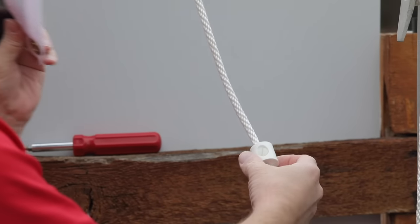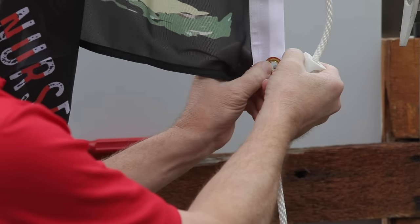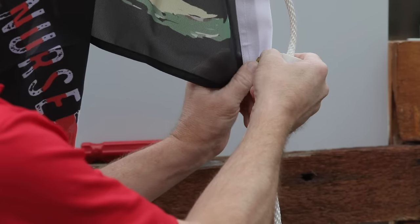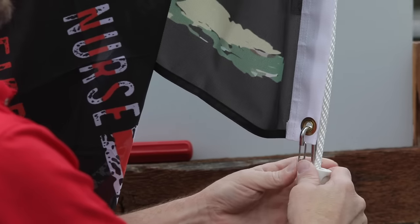While holding the flag slightly taut with one hand, draw down on the halyard with your other hand to locate the best position for the second zip clip.